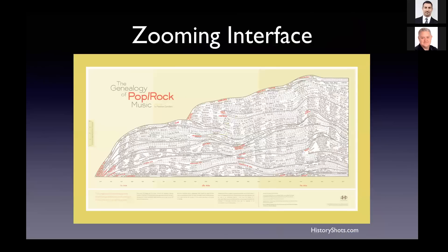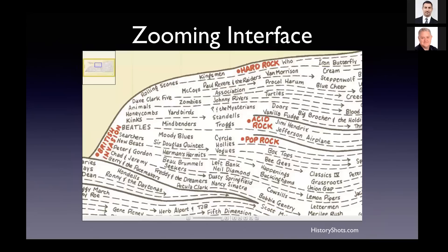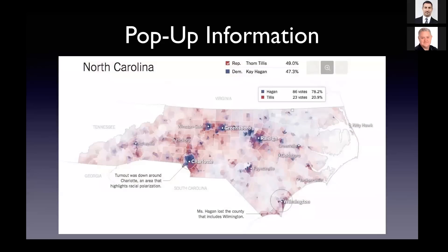Moving up in levels of difficulty is a zooming interface. If the static design is so complex — like this poster of the history of pop and rock music over the last hundred years — it's really complex and you can't read all the information because it's sold as a printed poster. You get a zooming interface online where you can zoom in, engage with the data, and move around to see different parts. So it's still a static design, but there are interactive tools available online. There's another one called pop-up information, where the visual design is nice and clean and simple — like this election map from the New York Times for the state of North Carolina, where each voting district is color-coded based on election results. All the numbers are hidden until you hover over a voting district, which pops up the actual voting details.